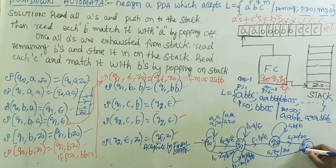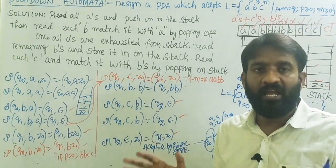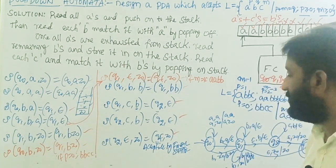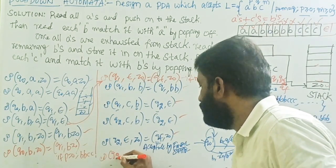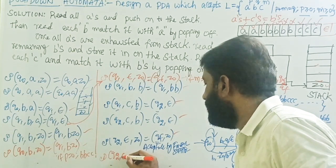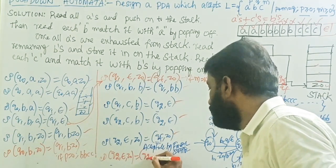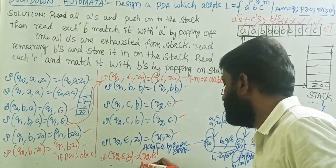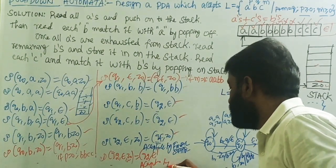From Q2 to QF: input Epsilon, top of stack Z-naught — top of stack remains Z-naught, this is the final state. If you also want the design to support acceptance by empty stack, simply add the transition: Q2 with Epsilon and top of stack Z-naught equals Q2 with Epsilon — remove Z-naught from the stack. This is what is called acceptance by empty stack.